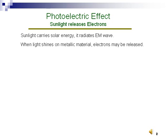When sunlight shines on metallic materials, it may release electrons. Sometimes solar energy is also called photon energy. When photon energy is converted to electrical energy, it gives a lot of applications.